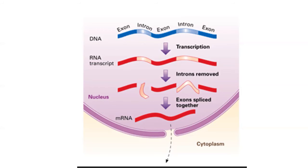Once the messenger RNA is complete, another process splices together exons that actually encode the protein and splices out introns that do not. The completed messenger RNA then leaves the nucleus through a nuclear pore, and translation, the second step in getting from a gene to a protein, takes place in the cytoplasm.